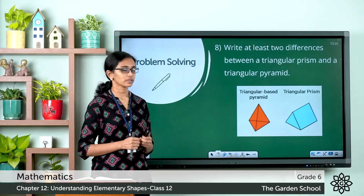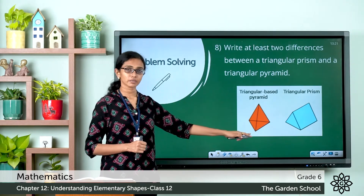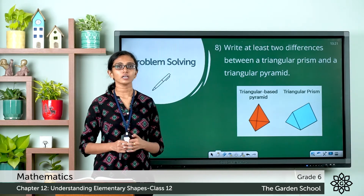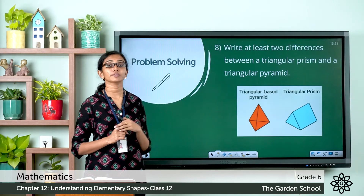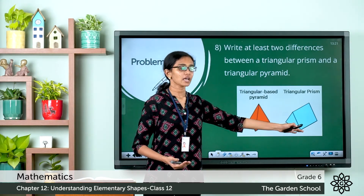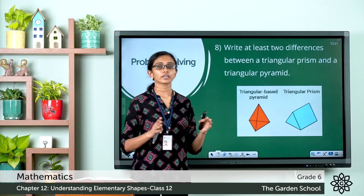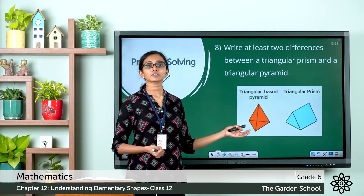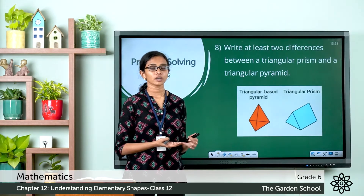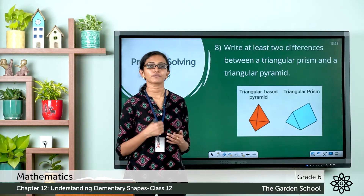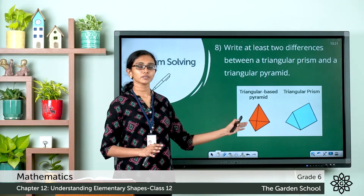Question number 8: write at least two differences between a triangular prism and a triangular pyramid. Both are solid shapes. A pyramid has a polygon base and triangular faces that meet at a common point called the apex. A prism has two identical bases and rectangular or parallelogram faces around it. The cross section of a prism is the same along its length, whereas the cross section of a pyramid will have different dimensions at different points.